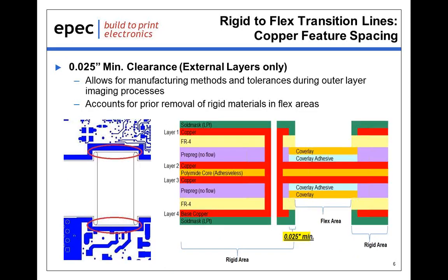The second item pertains to the external layers and the copper features that exist on them. A minimum spacing of a copper feature to the rigid-to-flex transition line of 25,000 minimum allows for the manufacturing methods and tolerances during the specific outer layer imaging processes only. Again, this is specifically driven by the fact that the rigid materials have been removed and do not exist during this process step in the flexible areas.